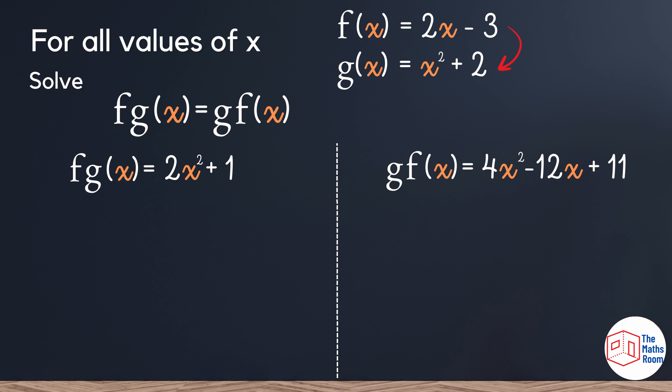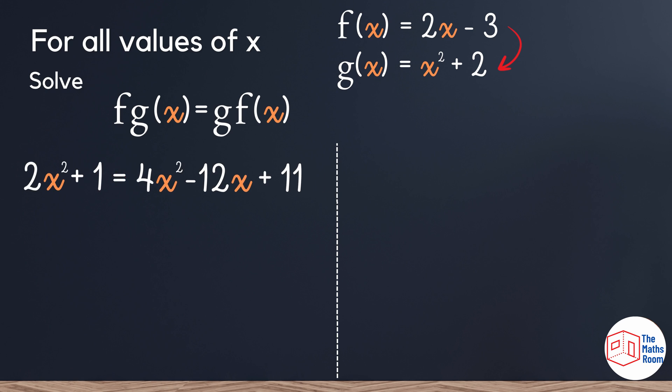Now that I have my two equations, I need to put them equal to each other. After this, I'm going to rearrange my formula to make it equal to 0. I'm going to bring all my terms on the left hand side to the right and collect them. Now I can see that there's a common factor of 2, so I'm going to divide all my terms by 2. So I'm left with x squared minus 6x plus 5.